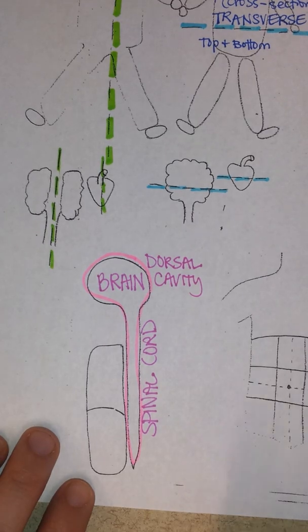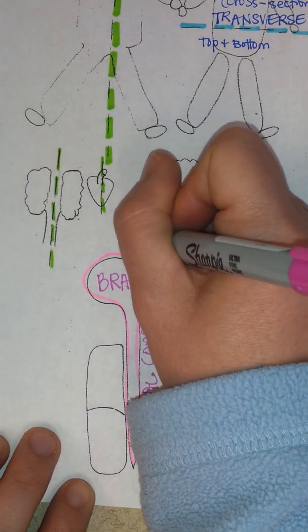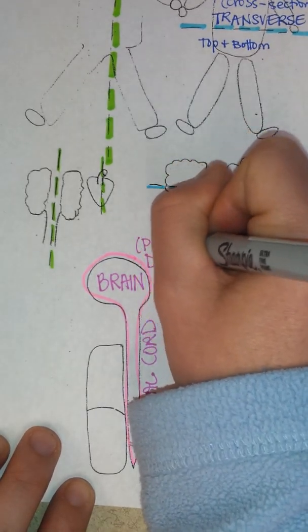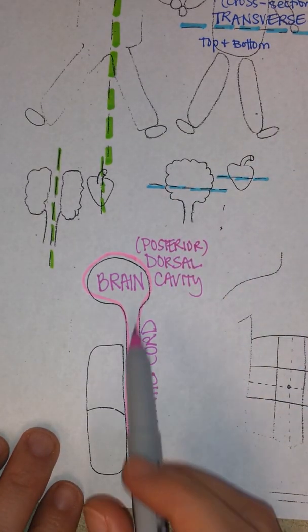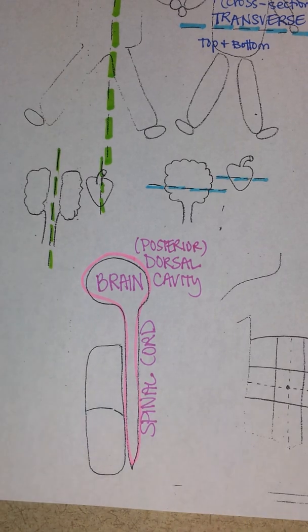You might remember on our previous page of our notes, sometimes dorsal is used interchangeably with posterior. So the posterior body cavity contains the brain and the spinal cord. Then it's kind of separated from the rest of the organs by the spine.